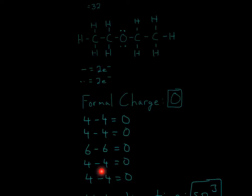1, 2, 3, 4. 4 minus 4 is 0. Once again, 1, 2, 3, 4. 4 minus 4 is 0. So formal charge of 0 on each one of these elements.